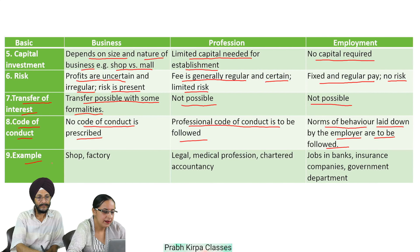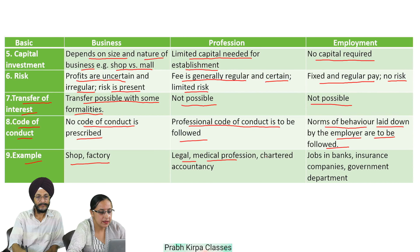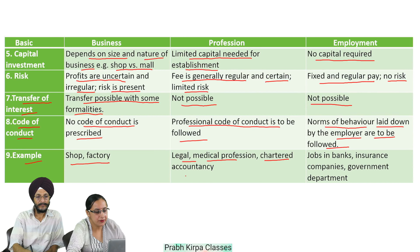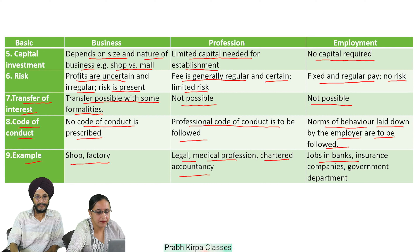Ninth: Examples. Examples of business are shop and factory. Examples of profession are legal profession, medical profession, and chartered accountancy. Examples of employment are jobs in banks, insurance companies, and government departments.